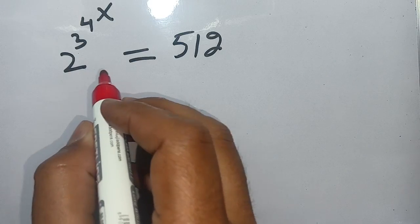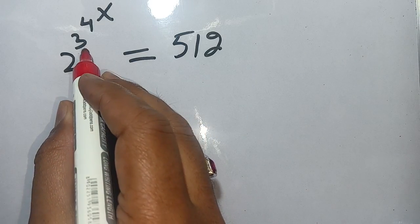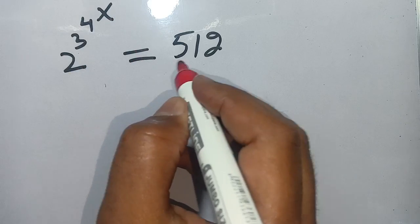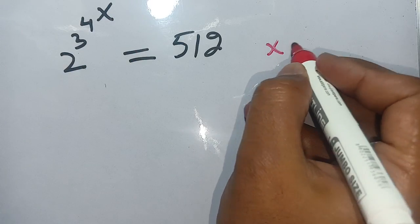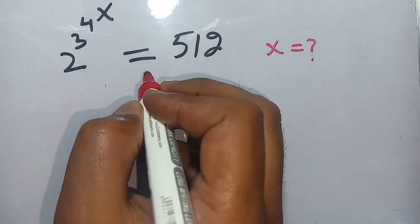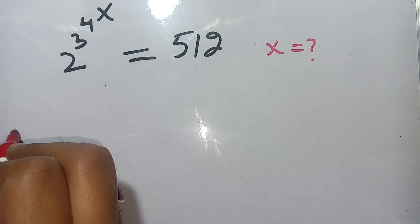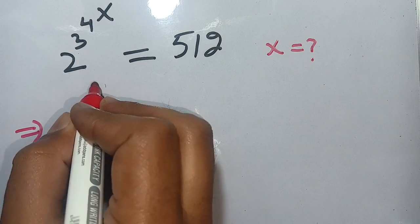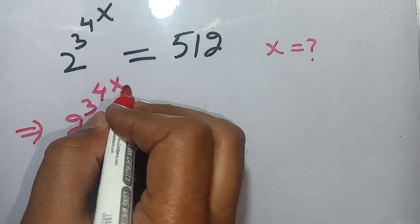Hello everyone. How to solve this exponential equation: 2 raised to the power 3 raised to the power 4 raised to the power x is equal to 512. We have to find the value of x which satisfies this exponential equation. Let us solve this. We write this as 2 raise to power 3 raise to power 4 raise to power x is equal to 512.